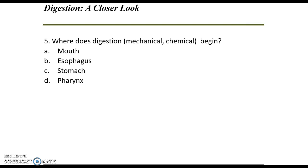So where does digestion actually start? Mechanical digestion is squishing food up — like chewing — and also our stomach churning to physically make it smaller. Chemical digestion also starts in the mouth. The answer is the mouth — our salivary amylase, our saliva, contains that digestive enzyme that starts to break down carbohydrates and starches. So the digestion of starch actually happens right there in our mouths, and chewing is mechanical digestion.